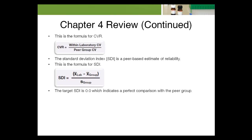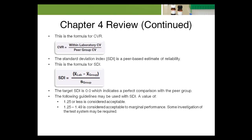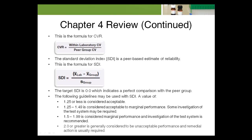The target SDI is zero, indicating a perfect comparison with the peer group. SDI guidelines: 1.25 or less is acceptable; 1.25 to 1.49 is acceptable to marginal; 1.5 to 1.99 is marginal and investigation is recommended; 2 or greater is generally unacceptable and remedial action is usually required.